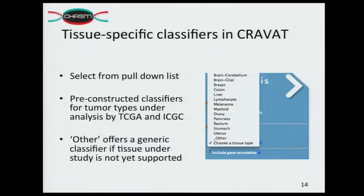CHASM is not just one classifier — it's many classifiers. There's really one for each tumor tissue type, and you can select a tumor tissue type in CRAVAT. We also have a generic classifier for tissue types not yet supported, and we are trying to grow this library of pre-constructed classifiers.